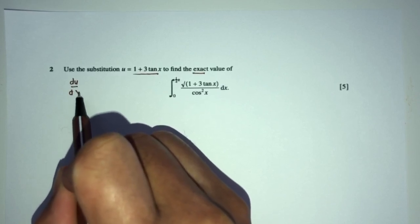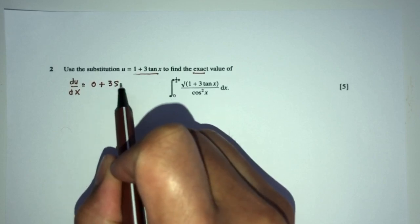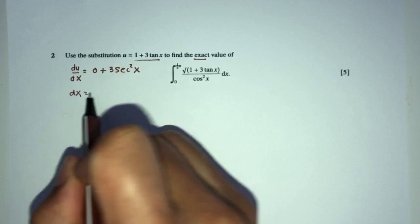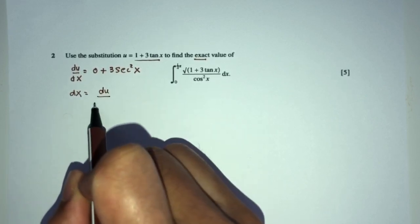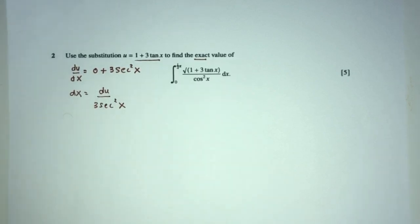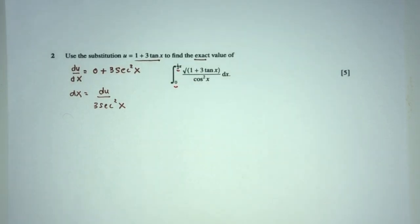So let's find du/dx. To differentiate with respect to x, that will be 0 + 3, but that will be sec² x. Alright, cool. Now make dx become subject, that will be du divided by 3 sec² x. Now we have to change the limits as well for question involving substitution.